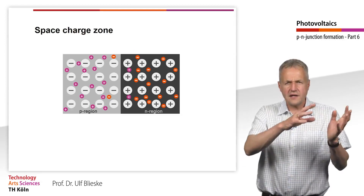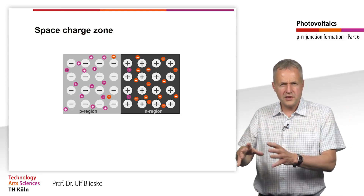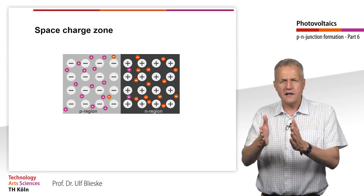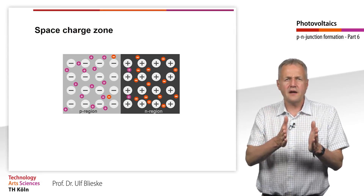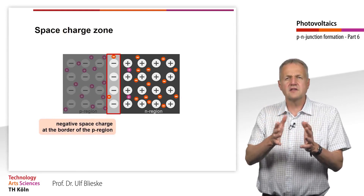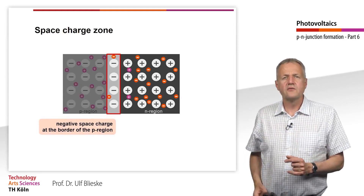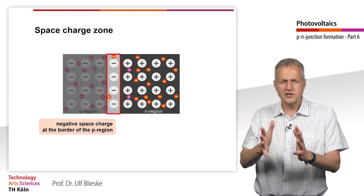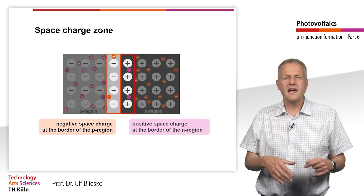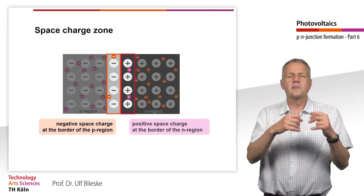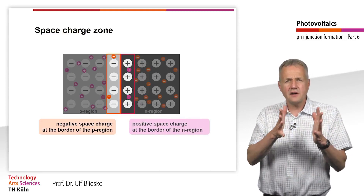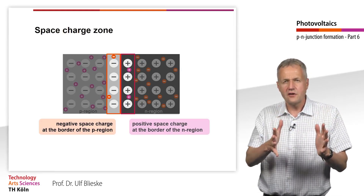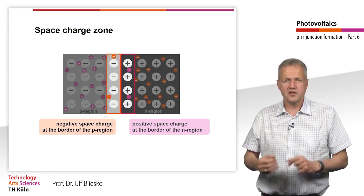Due to the diffusion of electrons from the N to the P region, at the edge of the P area, at the border of the N area, areas are created — marked here in red — which are no longer electrically neutral but negatively charged. Conversely, at the edge of the N area, at the border of the P area, an area is created — marked in red again — that is no longer electrically neutral but positively charged.